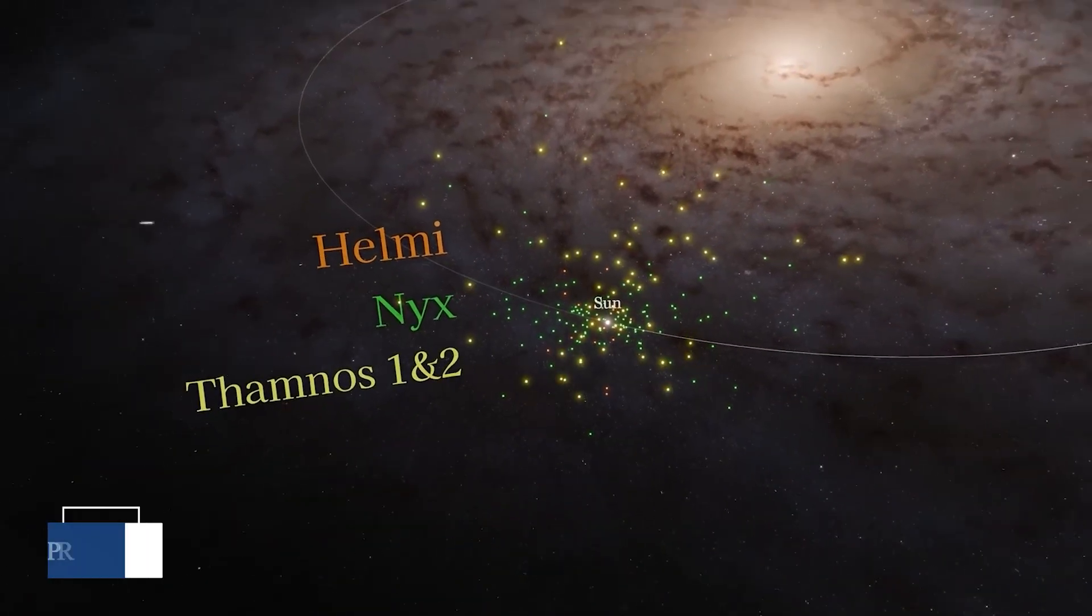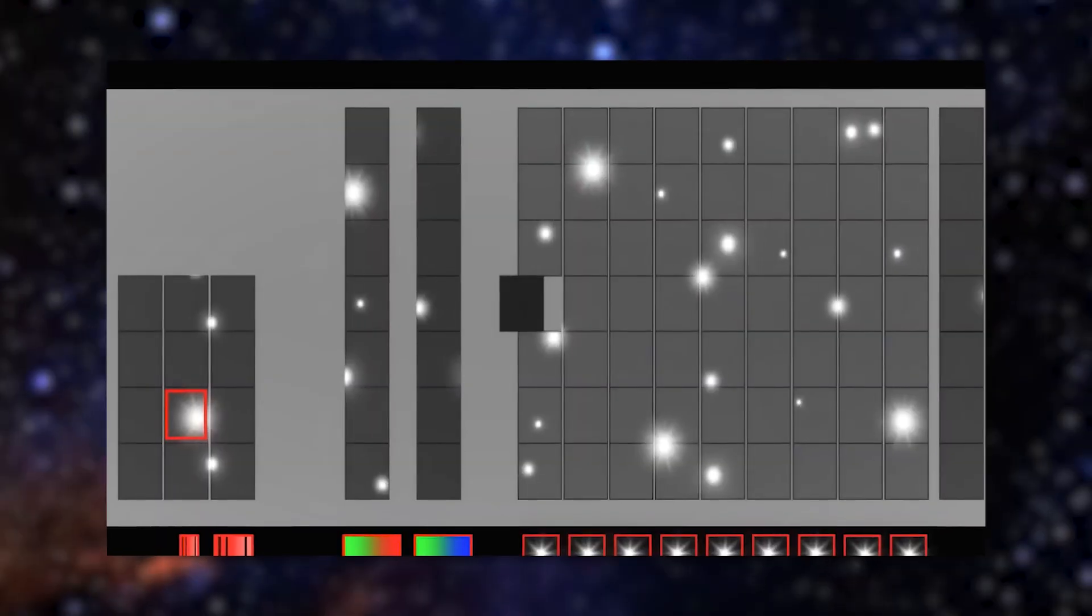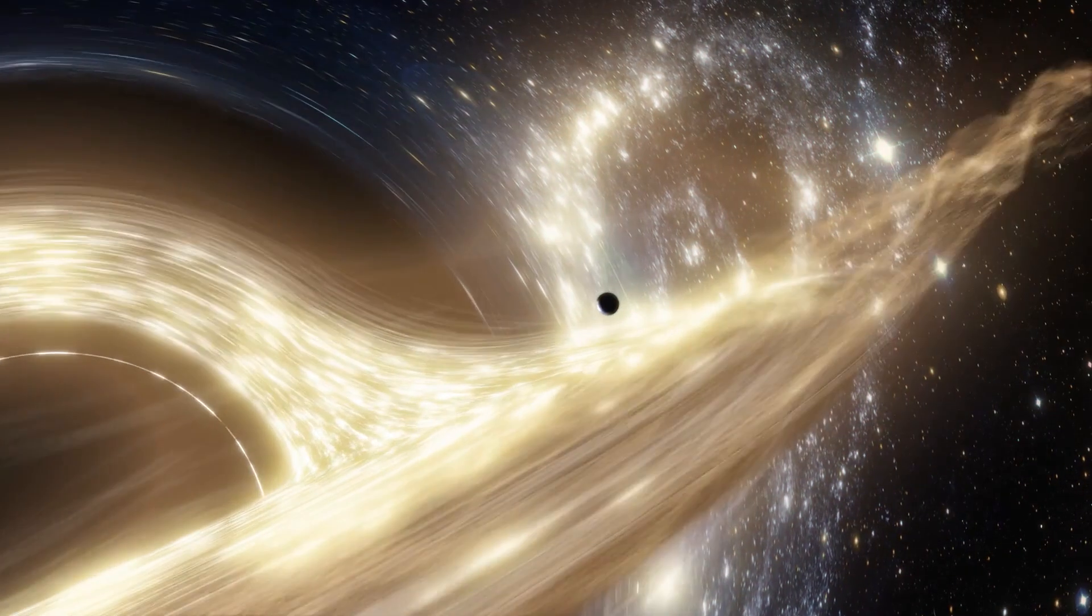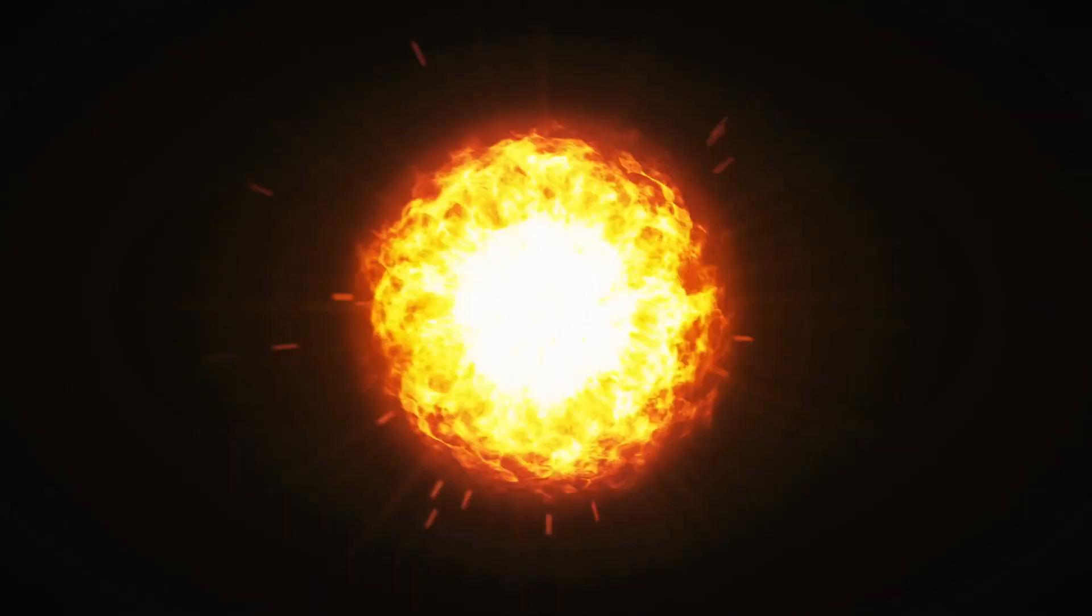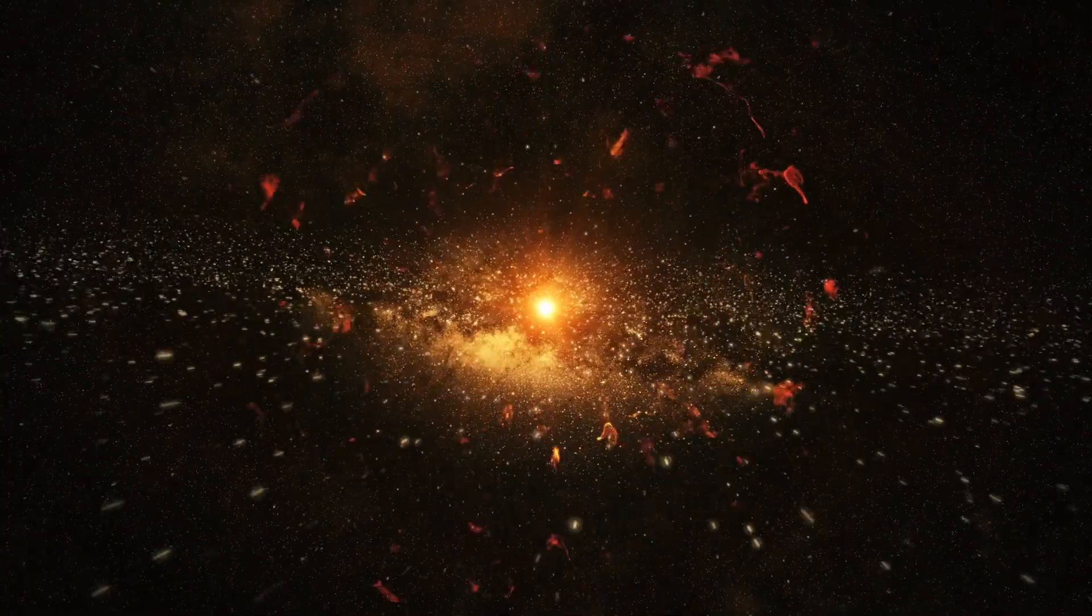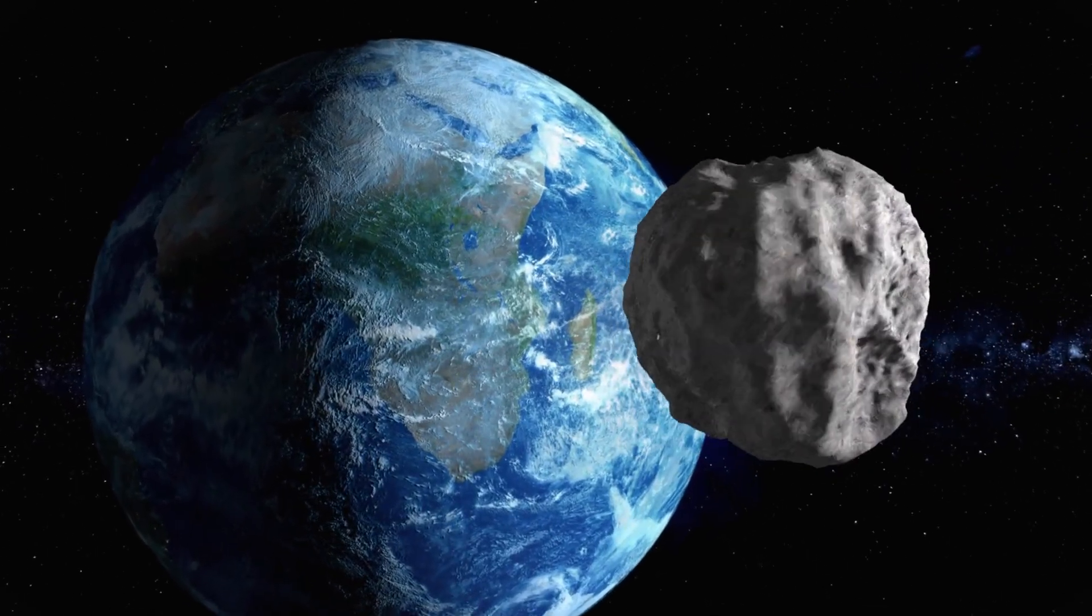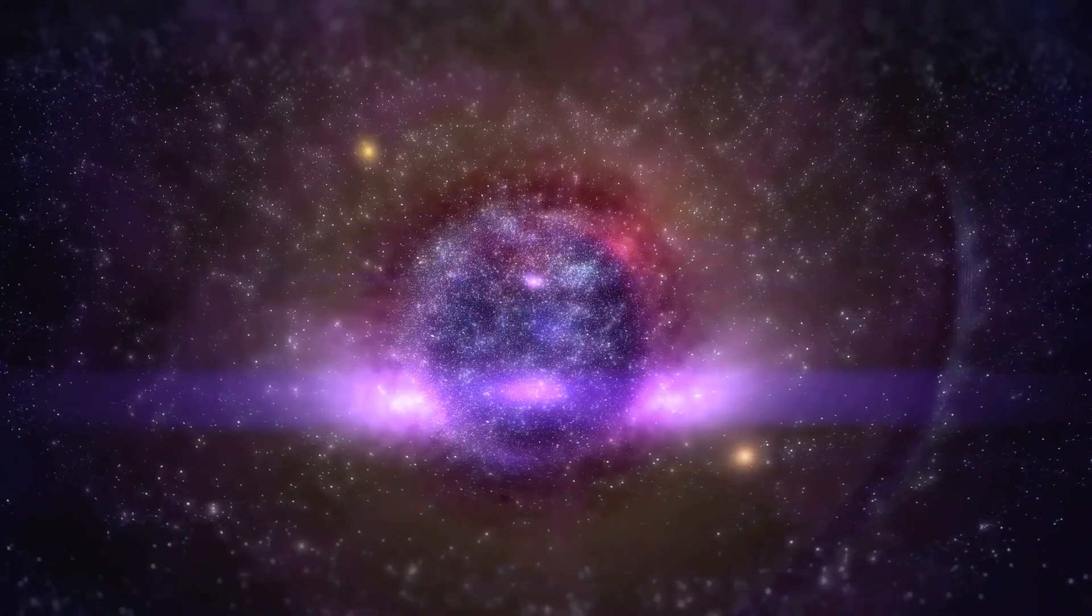Here's something that will really blow your mind. Scientists have found evidence of primordial black holes that might be drifting through these southern regions of space. These aren't the black holes formed from dying stars, but ancient black holes created in the first fraction of a second after the Big Bang. They could be as small as asteroids, but as massive as mountains, and they might make up a significant portion of the universe's mysterious dark matter.